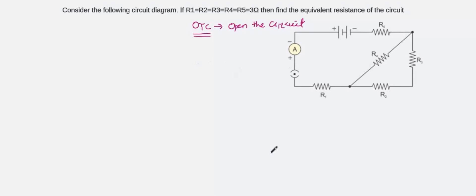We'll first open this circuit. We will open it from here — this is the positive terminal and this is the negative terminal. Just pull apart the positive end and the negative end in opposite directions. When we open the circuit, we will get a very simplified diagram. So if I stretch the positive terminal to the left, what do I get?